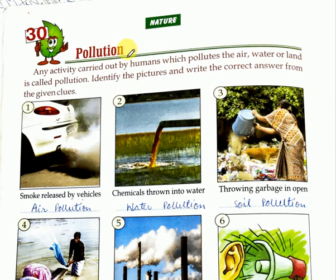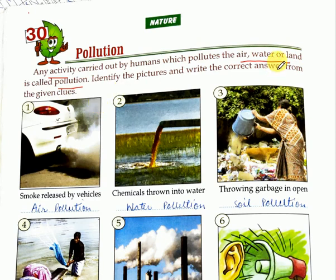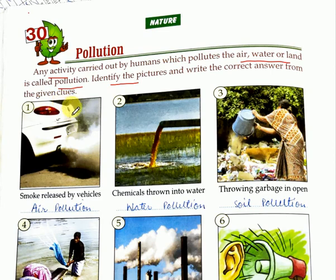So what is pollution? Any activity which is carried out by humans and which pollutes the air, water or land is called pollution. What you have to do in this chapter is identify the pictures and then write the correct answer from the given clues. It's a very simple chapter.